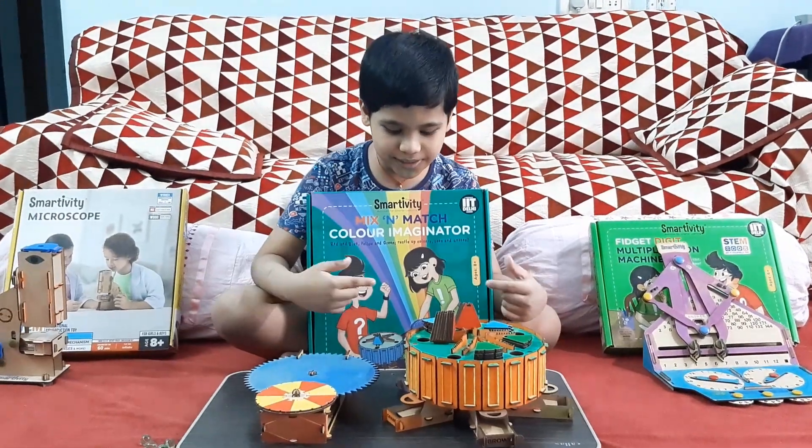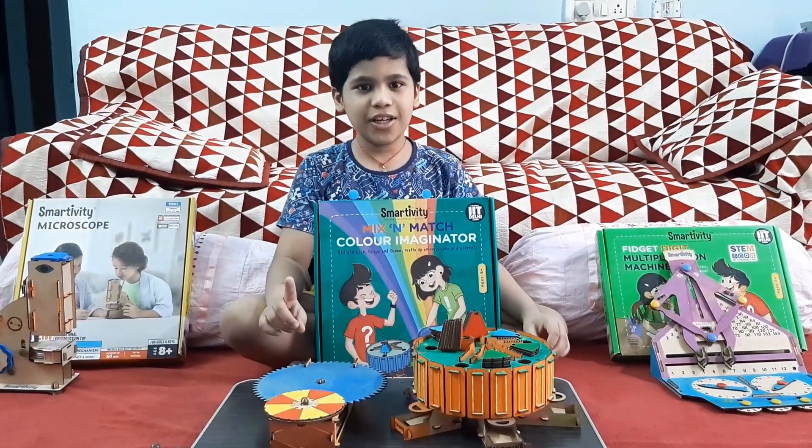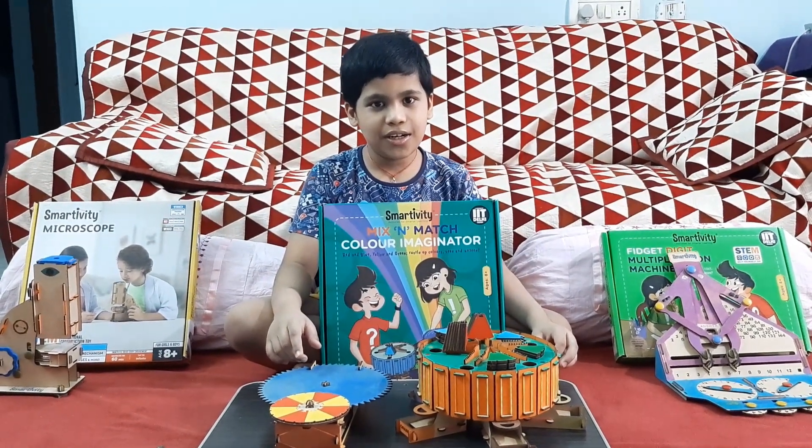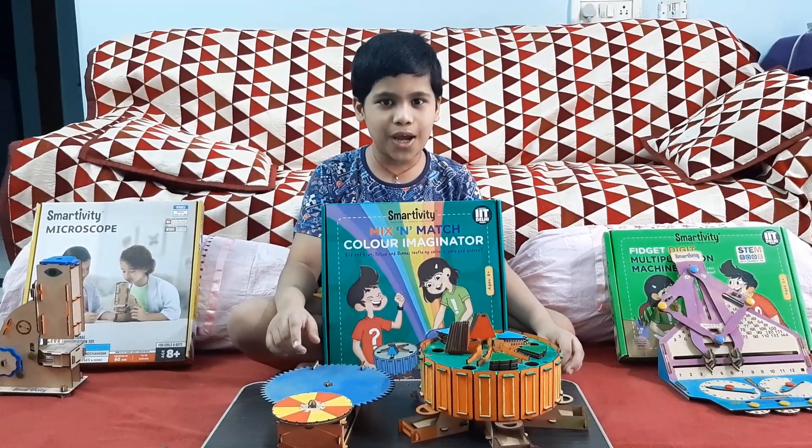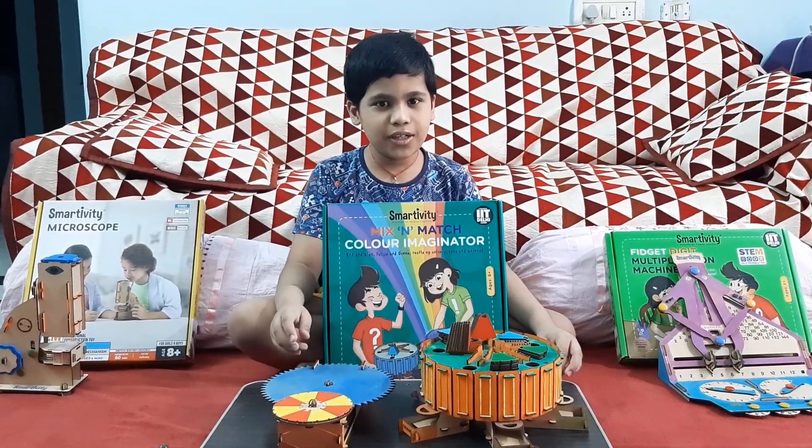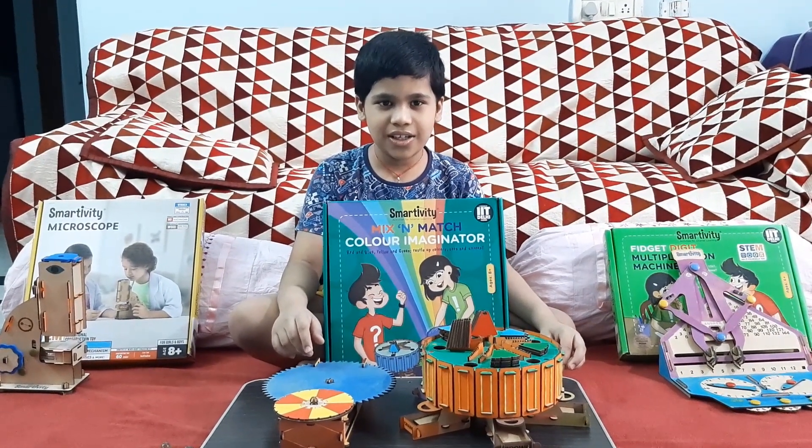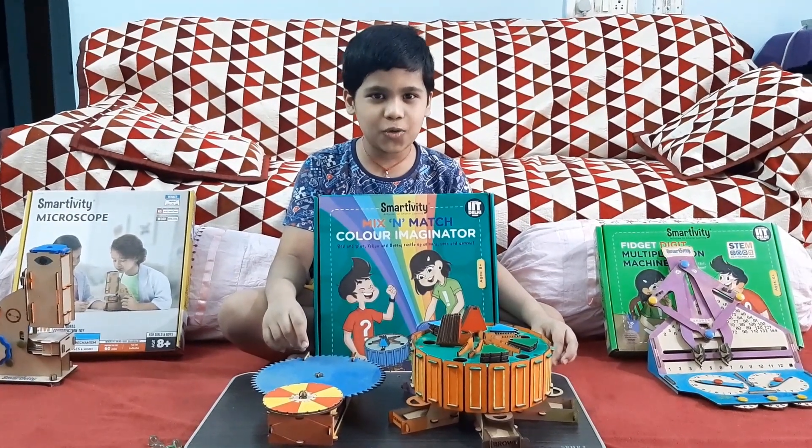This is Mixing Mac Color Imagination. We know there are 3 primary colors. Do you know what they are? They are red, yellow and blue. And when we mix the primary colors together, we get secondary colors. Do you know what they are? They are green, purple and orange. Let's do it in practical.